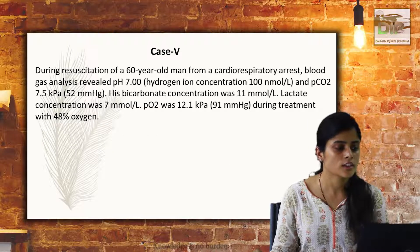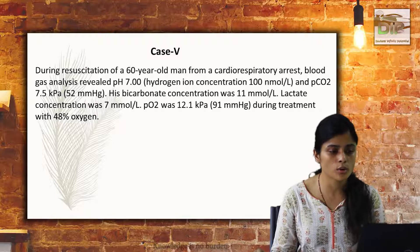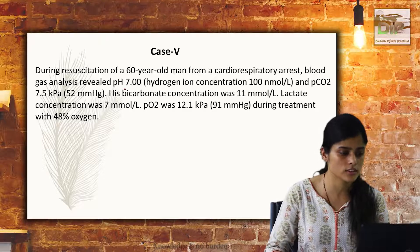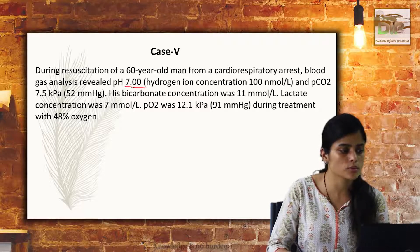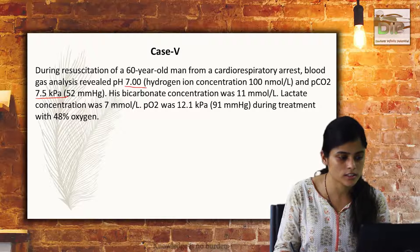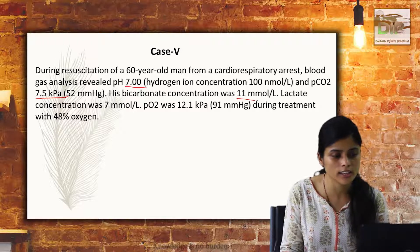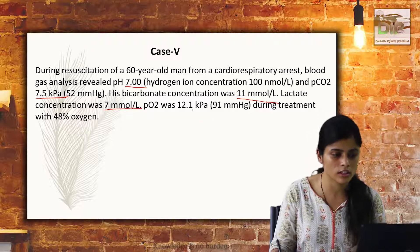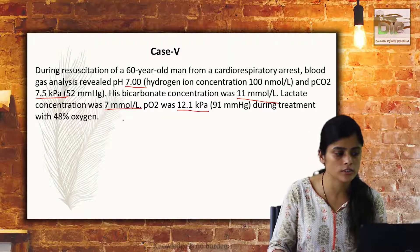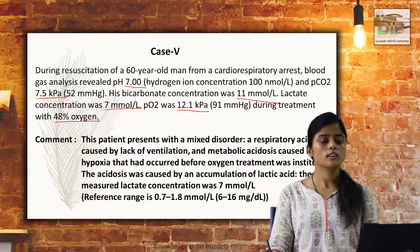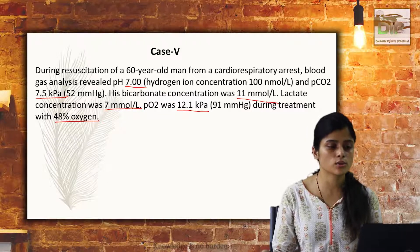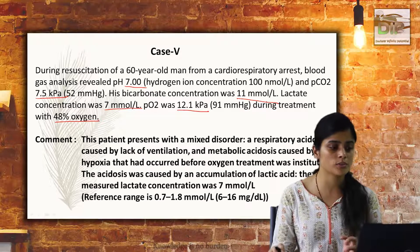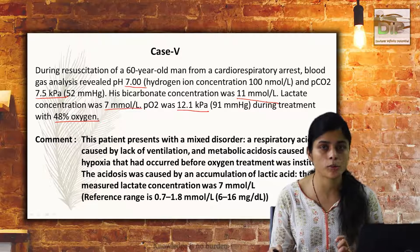The last case for today: during resuscitation of a 60-year-old man from a cardiorespiratory arrest, blood gas analysis revealed that pH was 7.0 — very low — PCO2 was 7.5 kilopascal which is getting higher, bicarbonate is very less, lactate concentration was very high, and PO2 was 12.1 after giving 48% oxygen. This patient shows a picture of a mixed type of disorder, where there is respiratory acidosis as well as metabolic acidosis.